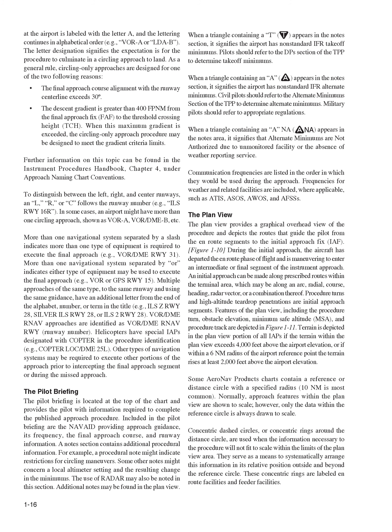When a triangle containing a T appears in the notes, it signifies the airport has non-standard IFR takeoff minimums. Pilots should refer to the DP section of the TPP to determine takeoff minimums. When a triangle containing an A appears in the notes, it signifies the airport has non-standard IFR alternate minimums. Civil pilots should refer to the alternate minimums section of the TPP to determine alternate minimums. Military pilots should refer to appropriate regulations. When a triangle containing an ANA appears in the notes area, it signifies that alternate minimums are not authorized due to an unmonitored facility or the absence of weather reporting service. Communication frequencies are listed in the order in which they would be used during the approach.